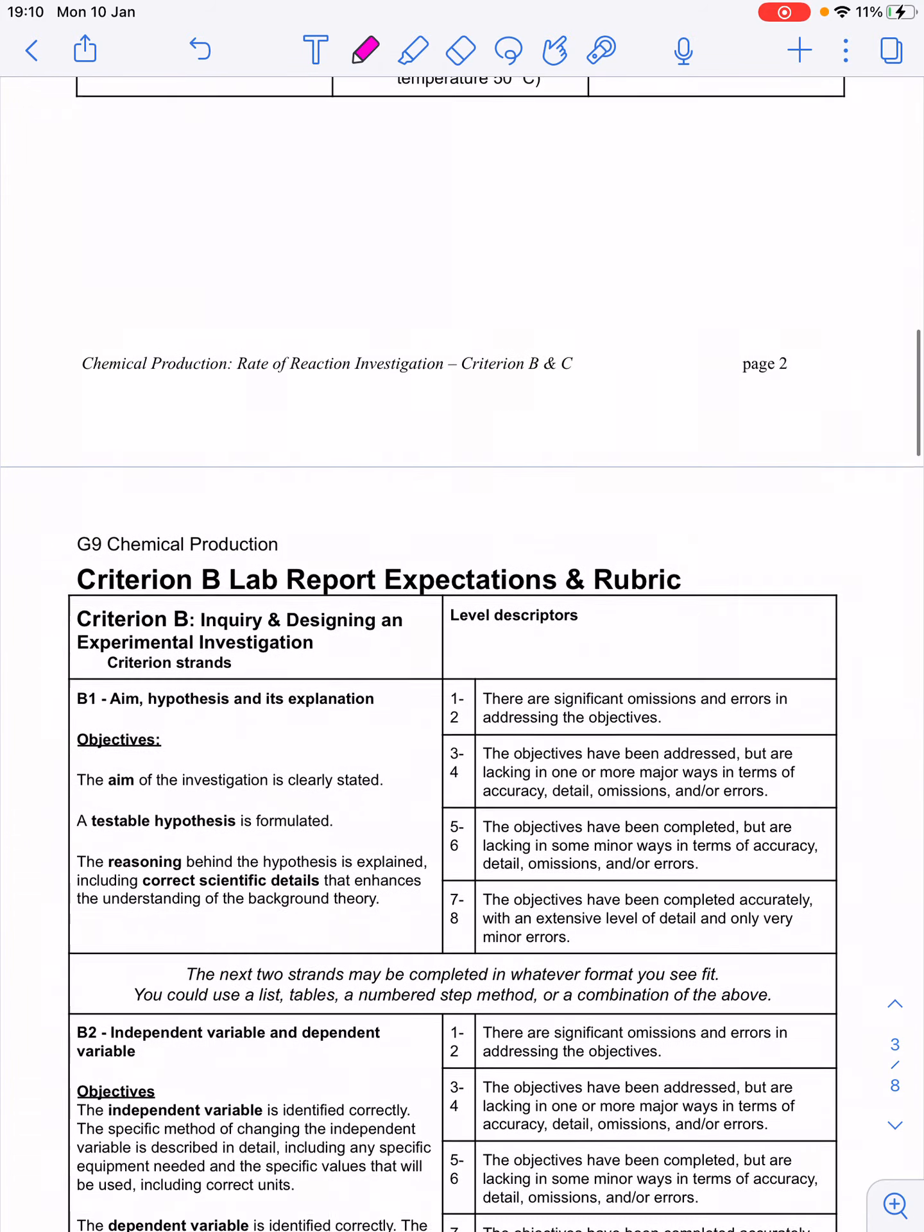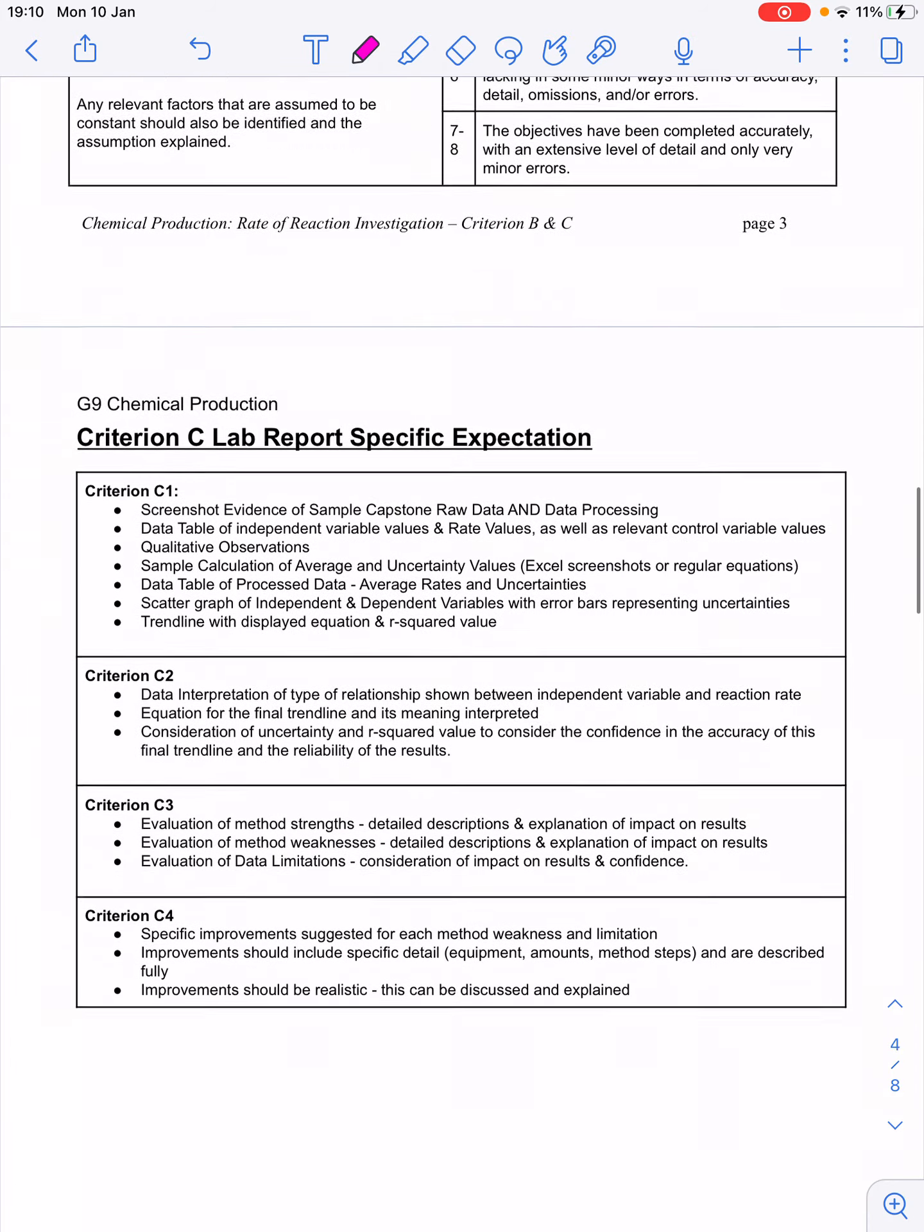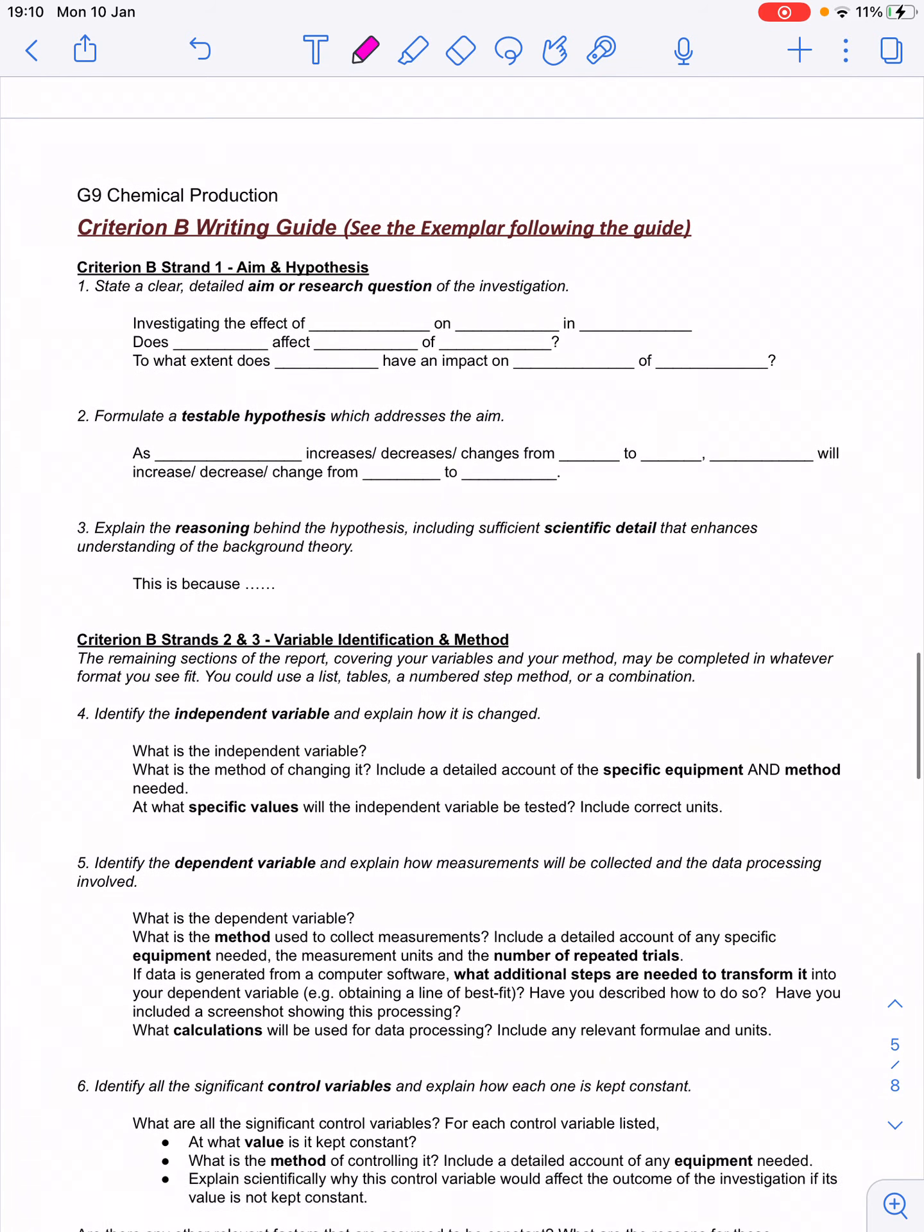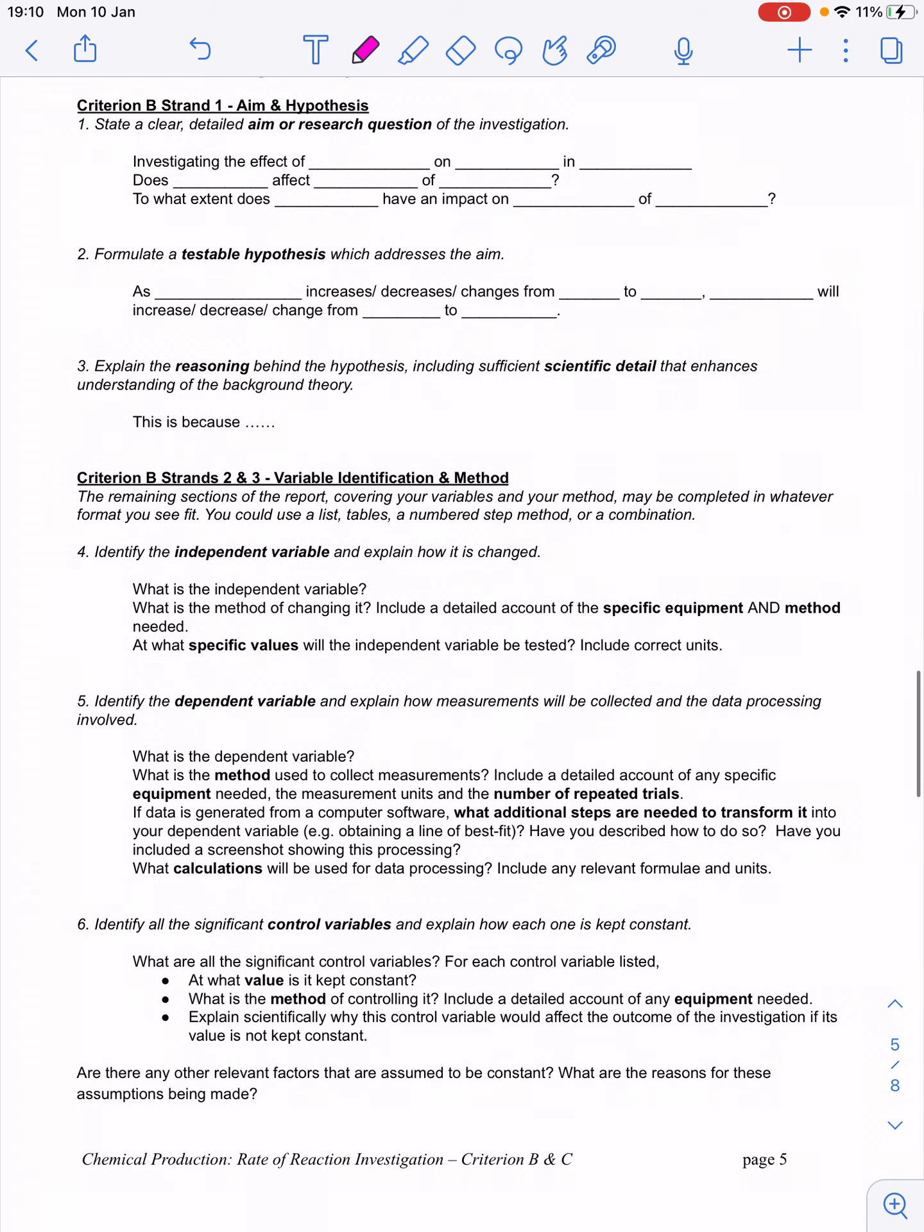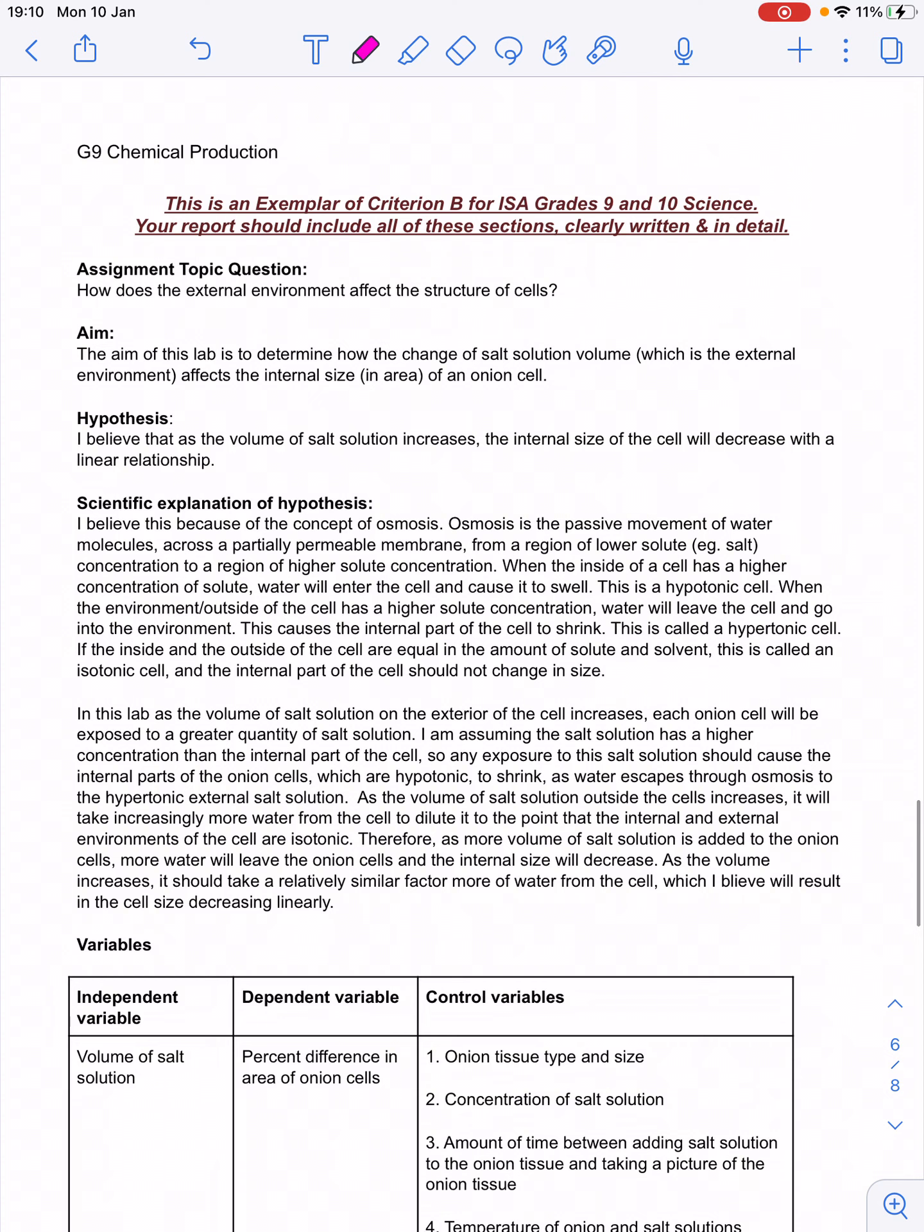Now, this is the handout that you have, and it outlines the Criterion B lab report expectations. Criterion C, which we don't have to worry about yet, this is kind of a fill-in-the-blank planner that could help you write your report. But I'm going to quickly look at an exemplar that's for a different lab, just to show you what this might look like.